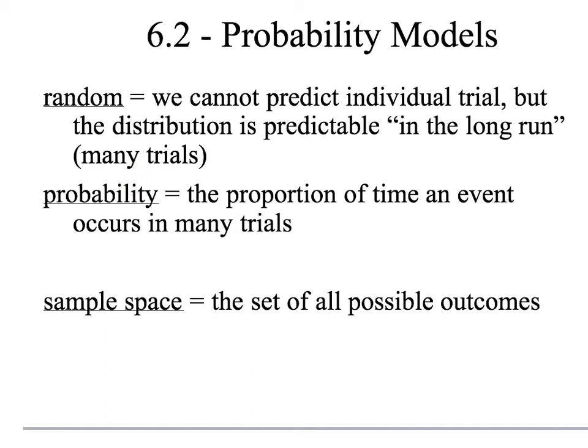For example, why do we say that a coin flip is random? Well, any one particular coin flip, we don't know whether it's going to come up heads or tails, but in the long run, we know that about half will be heads and about half will be tails. Kind of the same thing works for dice. You can't predict any one individual roll of the dice, but in the long run, if you roll many, many dice, you would expect about a sixth of them to come up any one particular number.